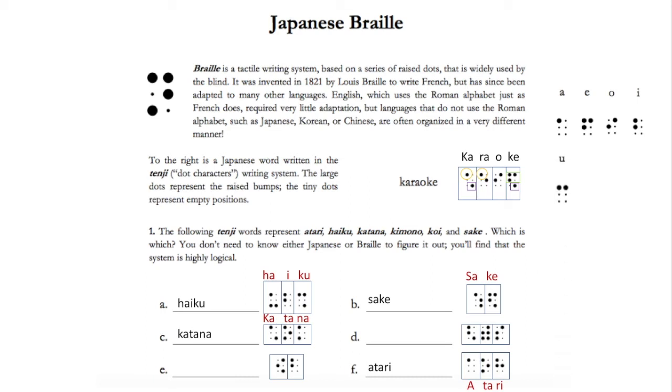Taking away the consonant K, then we can figure out koi, as it is the only one left ending in vowel I. And therefore, kimono is D.